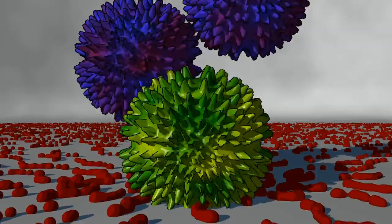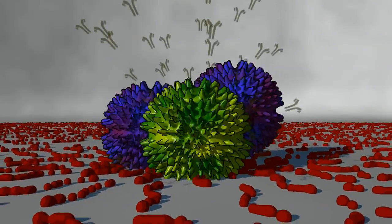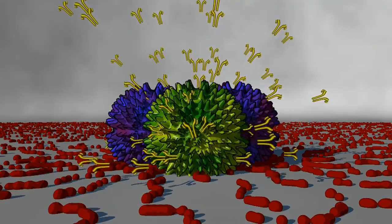When B cells and plasma cells find a particular germ, they manufacture antibodies that are tailored to recognize this foreign invader.